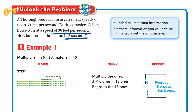In one second, her horse runs 36 feet, so in three seconds we need to find the total. The problem also asks: is there information you will not use? We don't need the thoroughbred racehorse detail — we only need information about Celia's horse. Since the horse runs 36 feet in one second, in three seconds we multiply 3 by 36, because repeated addition means multiplication.